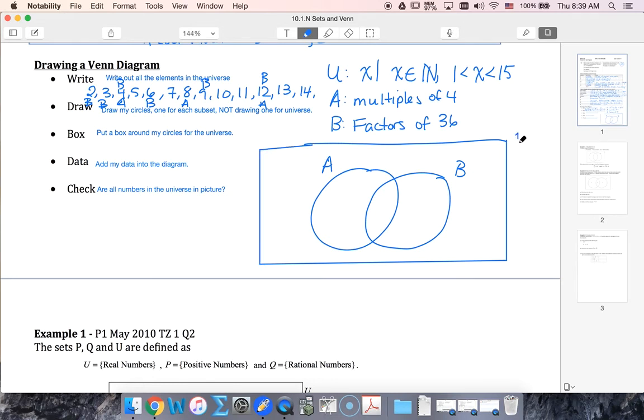All right, so that's my universe. Now I'm gonna add my data. I can see that 2 is only inside of B, 3 is only inside of B, 4 is inside of A and B so I'm gonna put it in the middle here. 5 is in neither one so it goes into the universe but not into a subset.